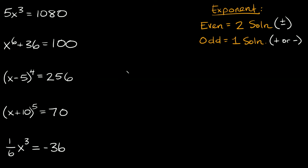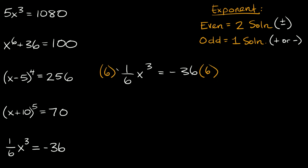For this last one we have a fraction: (1/6)x cubed is equal to negative 36. We have an odd exponent so we should expect one solution. The first thing we can do is get rid of this fraction by multiplying both sides by the reciprocal, which is 6. Those cancel out and we're left with x cubed is equal to negative 36 times 6, which is equal to negative 216.